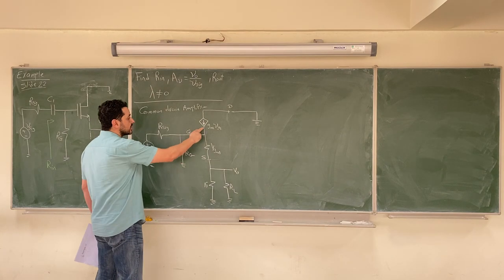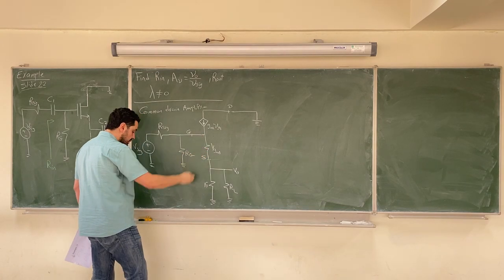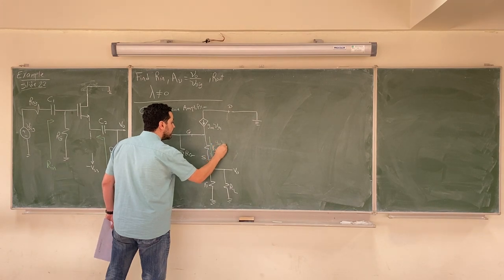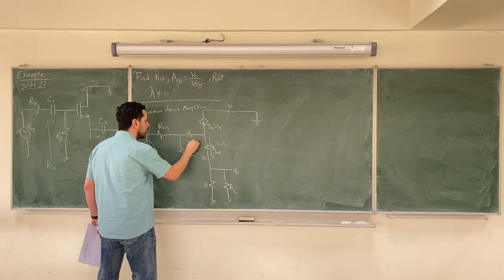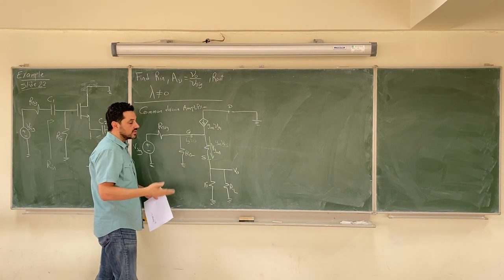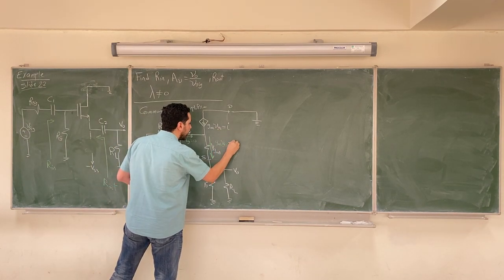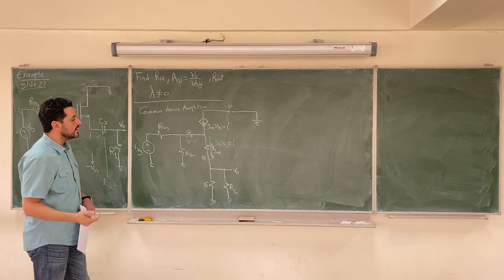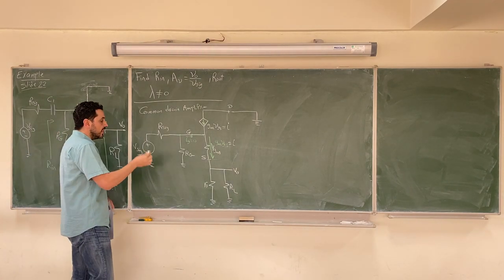Notice that this current source is GM·VGS, and the current through the 1/GM resistance is also GM·VGS — the same current. The gate current is zero. One way to simplify analysis is to call this current I, so the current here is I and the current here is I. This makes it easier instead of dealing with GM·VGS directly.